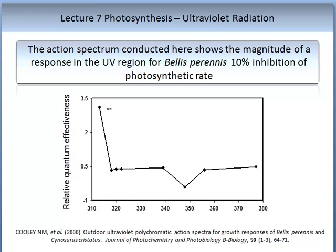Here is another example of an action spectrum, this one for the plant Bellis perennis, commonly known as daisy. The axes show relative quantum efficiency and wavelength. This action spectrum shows a 10% inhibition of photosynthetic rate at wavelengths of radiation in the UV spectrum. This demonstrates that light can not only promote photosynthesis but that certain regions of light can inhibit photosynthetic rate — an important consideration in agriculture.